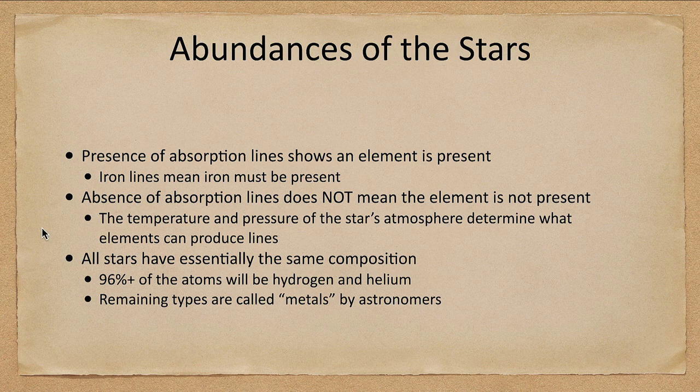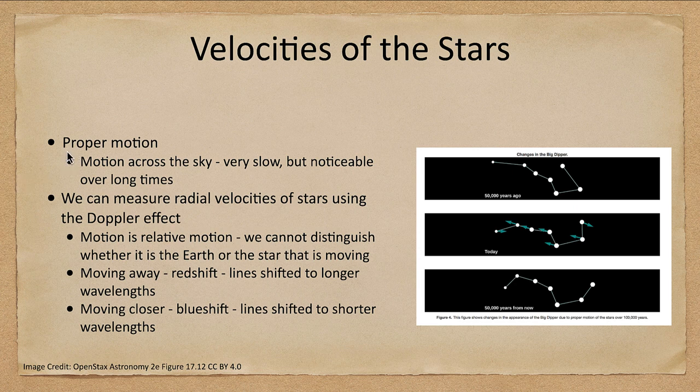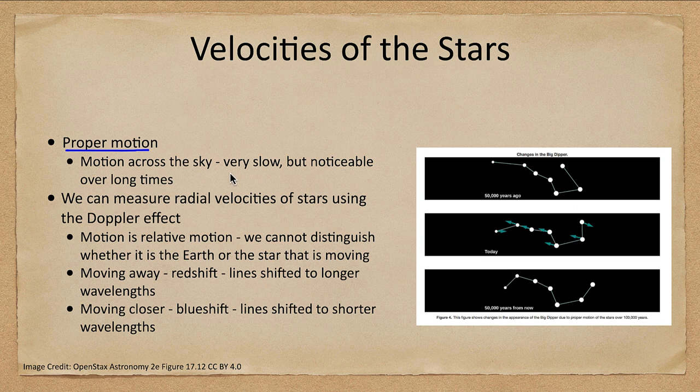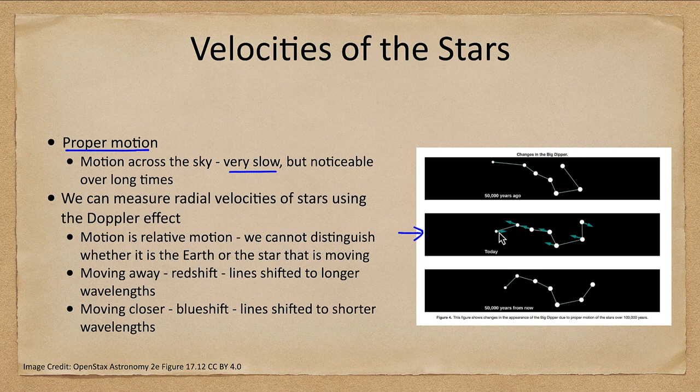What else can we learn from the spectra? We can learn something about the velocities. Let's start off by looking at the proper motion of a star, which is the motion of a star across the sky. It's very slow, but is noticeable over long times. Here is the Big Dipper, an asterism in the constellation of Ursa Major, and the arrows show the directions of motions of the star on the sky.